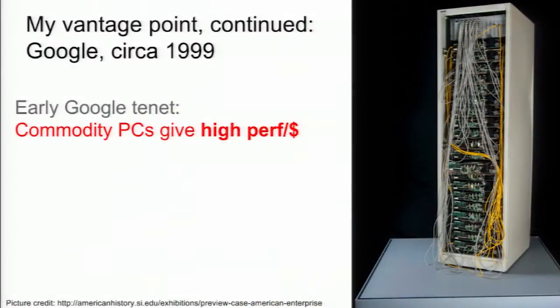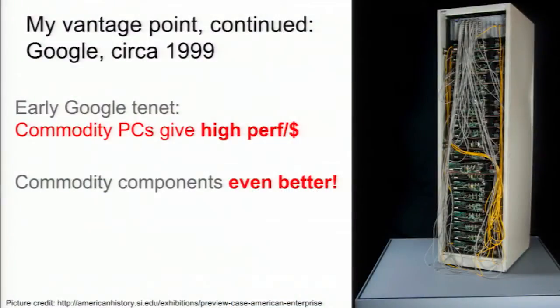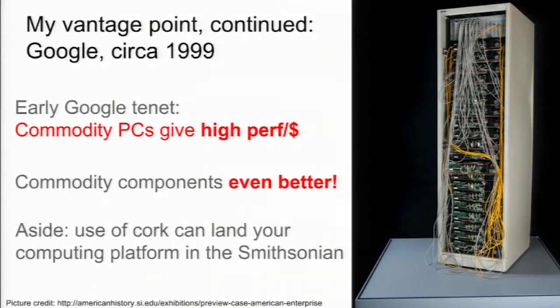Eventually I decided I wanted to go to a small company and joined Google — it was pretty small at the time. One of the early Google tenets was that PCs were even cheaper than workstations, riding a commodity wave of hundreds of millions of components produced every year, giving the highest performance per dollar. If you bought commodity components and assembled them yourself, you could do even better. Our earliest such design had four motherboards sharing a single power supply — perhaps unwise — and a thin layer of cork insulating them from the cookie tray. That cork got us into the Smithsonian.